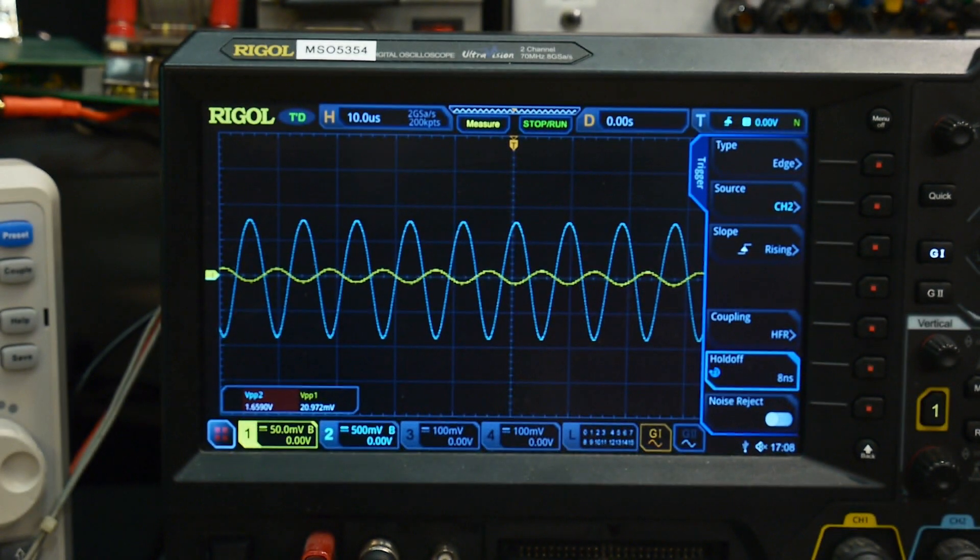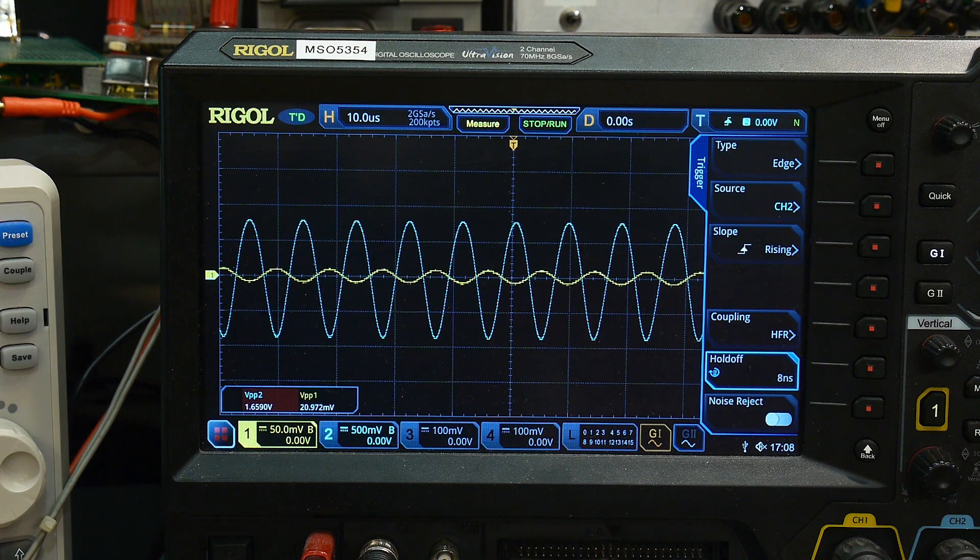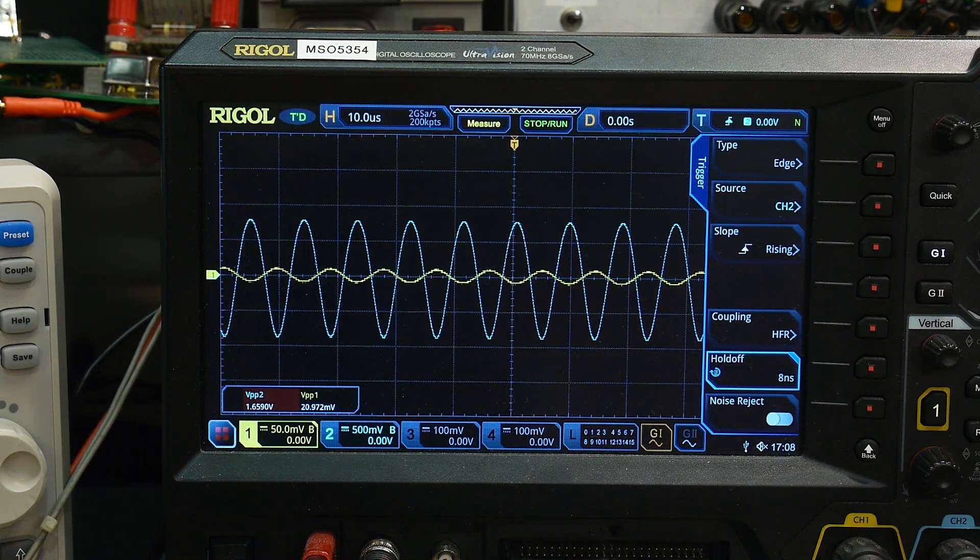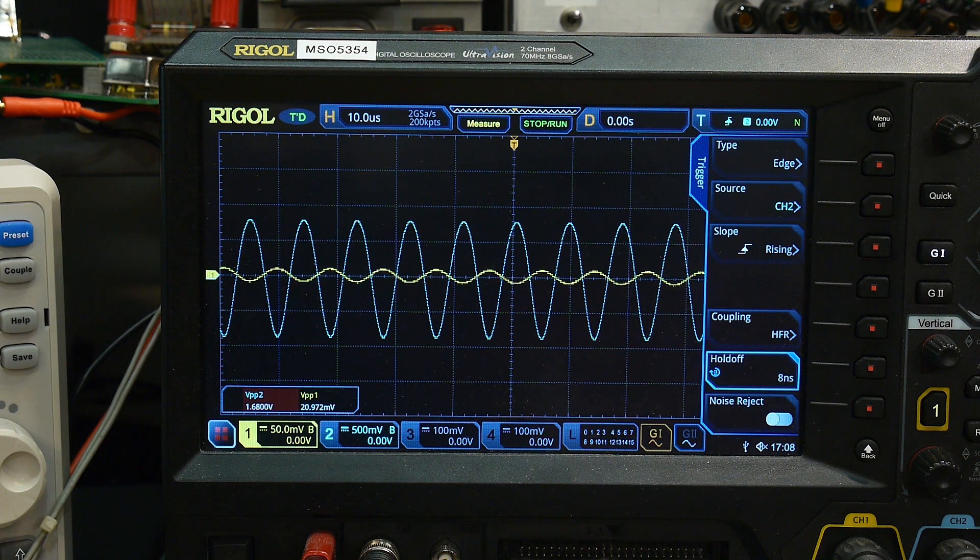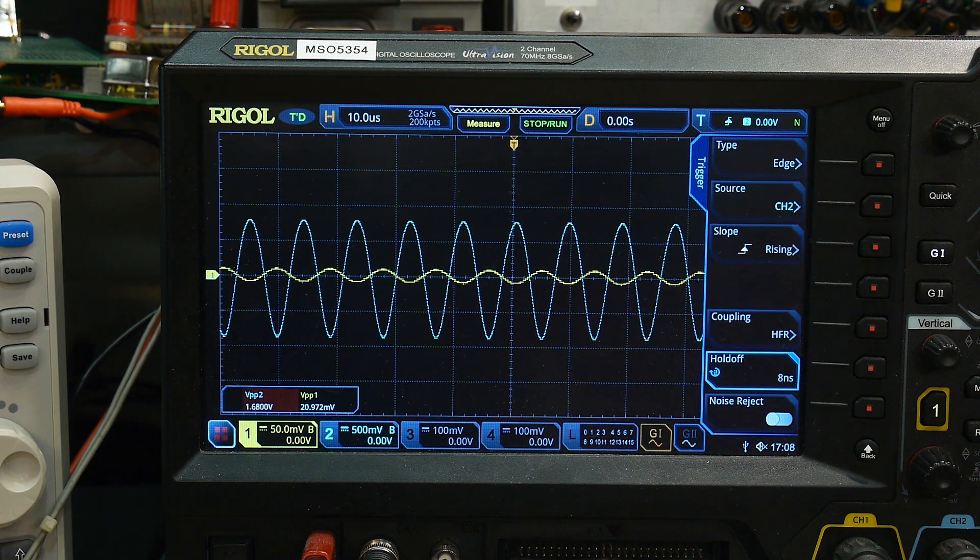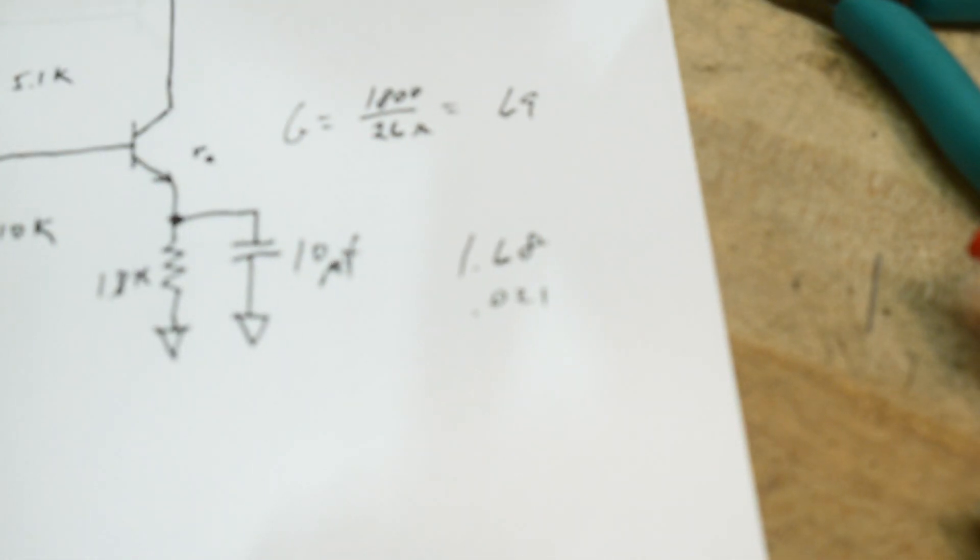Alright, I have it set up, so I'm measuring peak-to-peak voltages here. So the output is about 1.6 volts and the input is about 21 millivolts. So those are the numbers there.